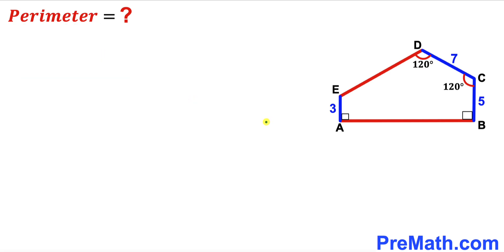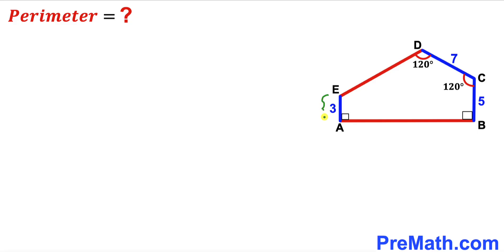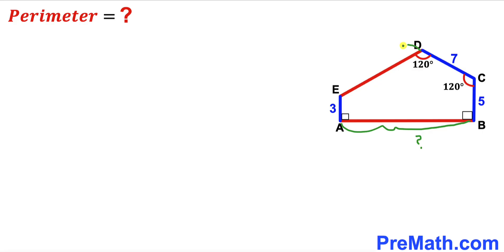Let's get started. We know the perimeter is the sum of all five sides of this pentagon. We can see side AE is 3 units, BC is 5 units, and CD is 7 units. However, side AB is unknown, and likewise side DE is unknown as well. So we are going to calculate AB and DE before we can find the perimeter.